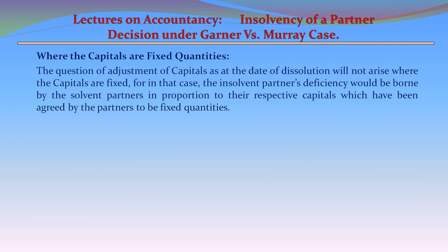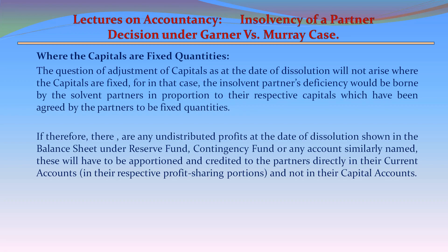Where the capitals are fixed quantities, the question of adjustment of capitals at the date of dissolution will not arise, for in that case the insolvent partner's deficiency would be borne by the solvent partners in proportion to the respective fixed capitals agreed upon. If there are any undistributed profits shown in the balance sheet under reserve fund, contingency fund, or any similarly named account, these would have to be apportioned and credited directly to the partners' current accounts in their respective profit-sharing proportions, and not in their capital accounts.